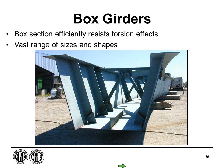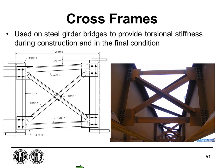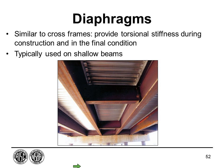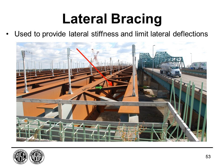Cross frames provide torsional stiffness both during construction and in the final condition, and are individually designed with various shapes and sizes using angles attached to girders with plates. When cross frame angles become too flat because the beams are shallow, it's better to use a steel diaphragm instead. Diaphragms are also used when loads are too high for cross frame members. Lateral bracing provides lateral stiffness and limits lateral deflections.